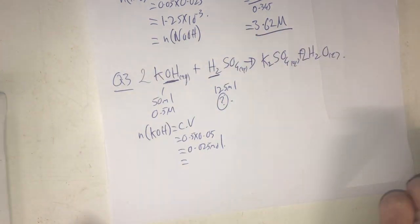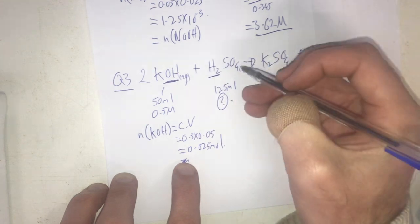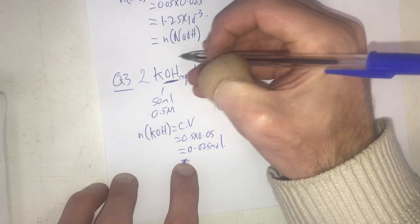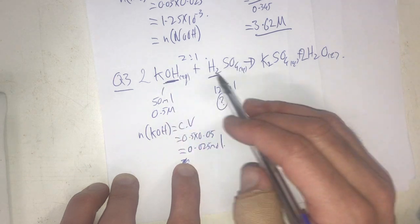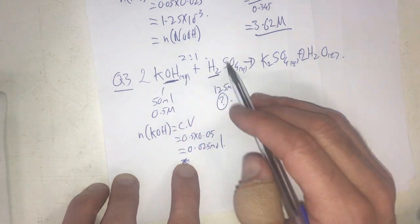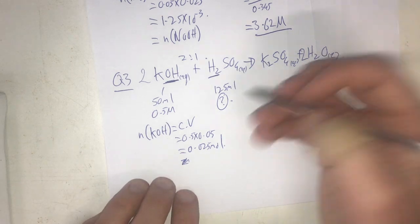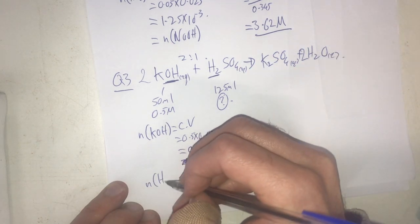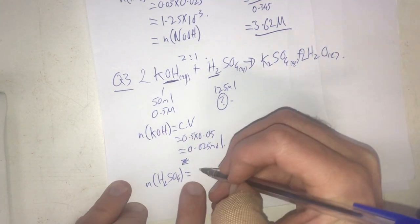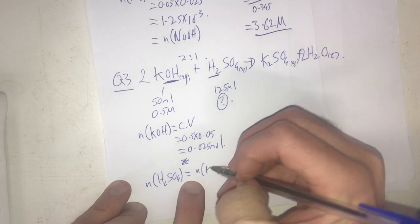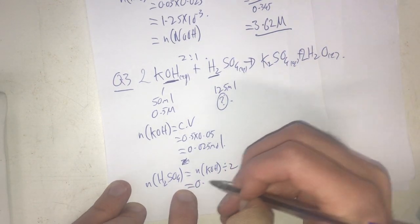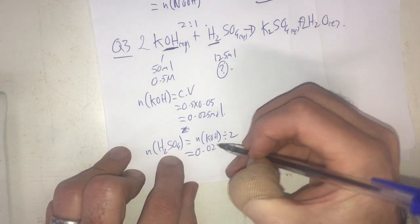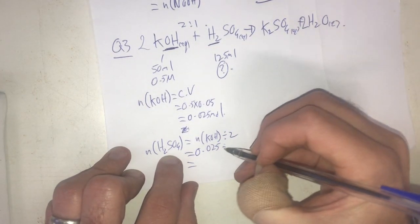That's going to be equal to - oh no it's not. What I need to do is I need to ratio here. Look at this, it's a 2 to 1 ratio, so for every 2 moles of this, I end up needing 1 mole of my sulfuric acid. So therefore my number of moles of sulfuric acid is going to be equal to my number of moles of KOH divided by 2, so therefore it's going to be 0.025 divided by 2.